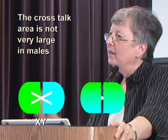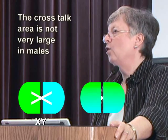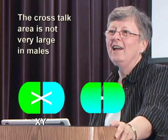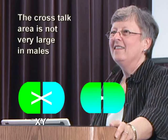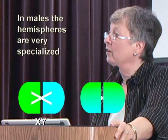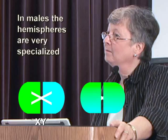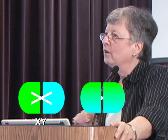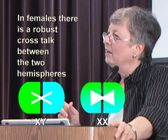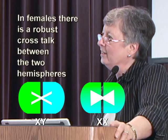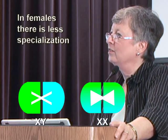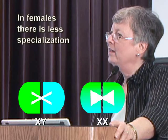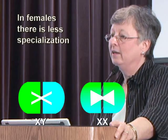In males, the crosstalk area is not very large. There is not a lot of crosstalk between the two hemispheres, which means that in males the hemispheres are very specialized. If you compare that with the situation in females, there is very robust crosstalk between the two hemispheres. There is less specialization — the hemispheres are more like each other than they are in males.